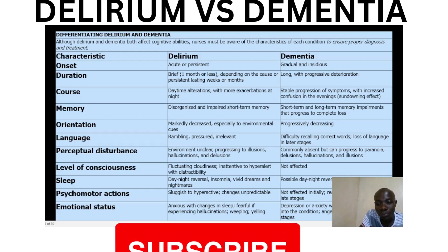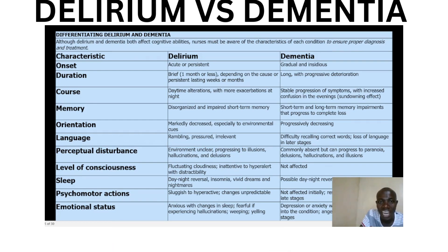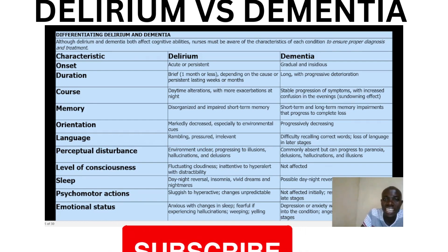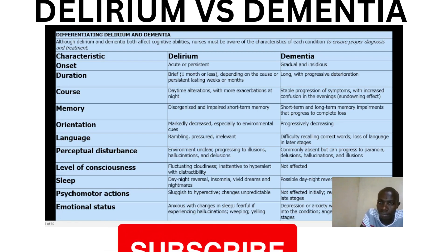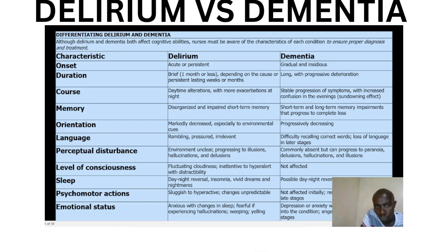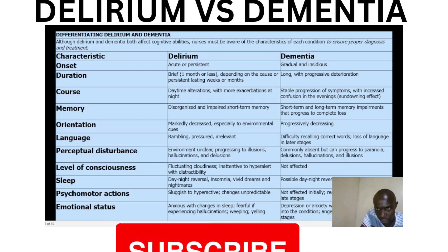All of them are neurological disorders. Dementia and delirium are two distinct medical conditions that affect cognition and mental functioning. While they share some similarities in terms of cognitive impairment, they have different causes, presentation, and underlying cause.